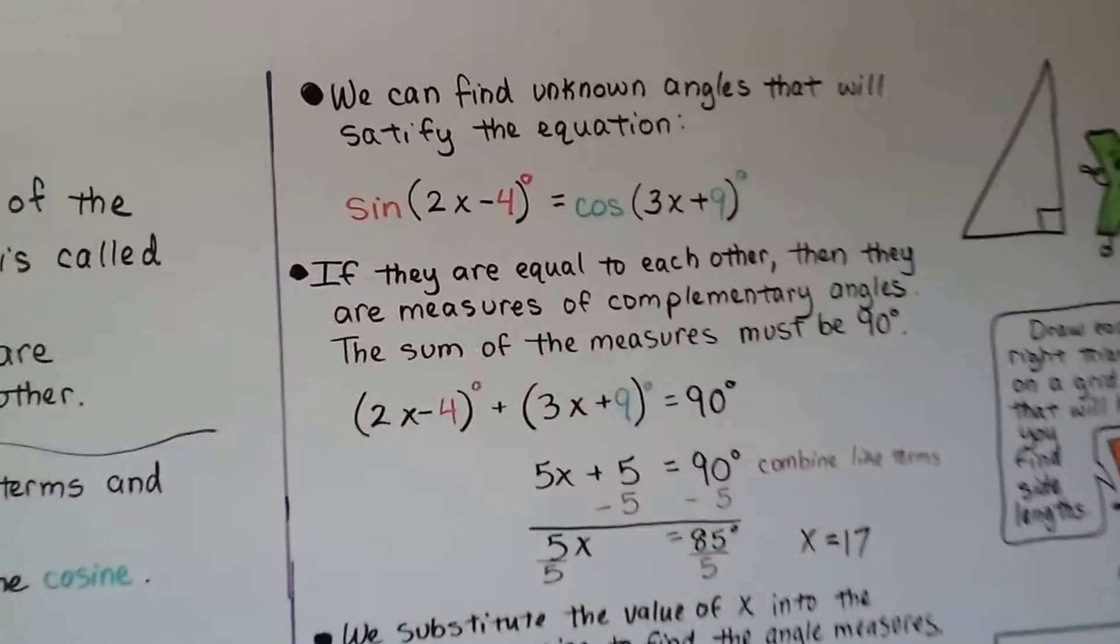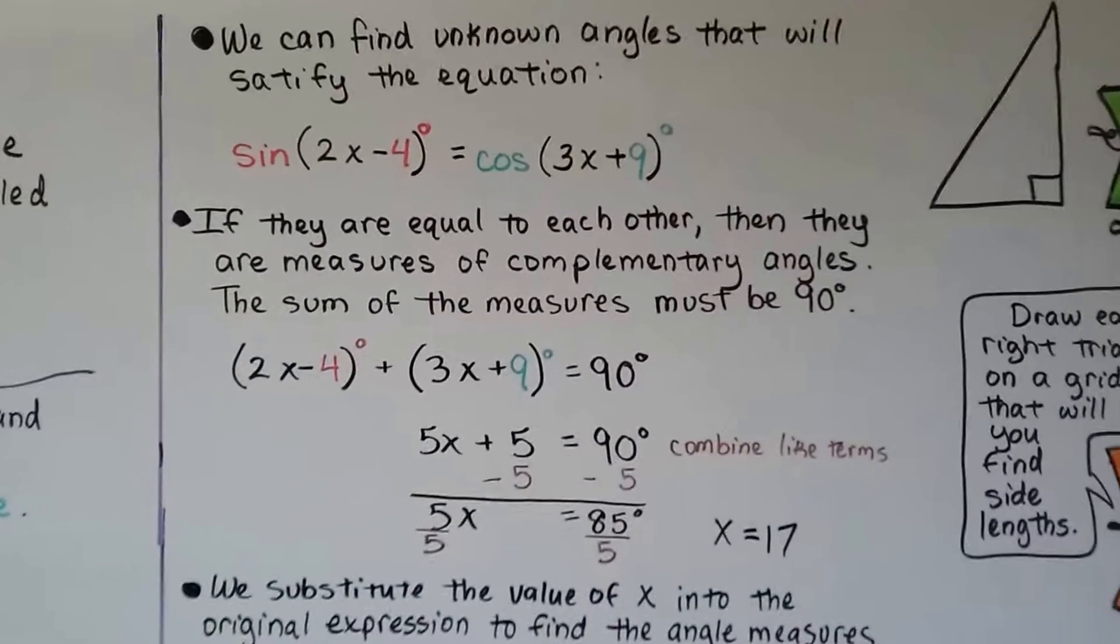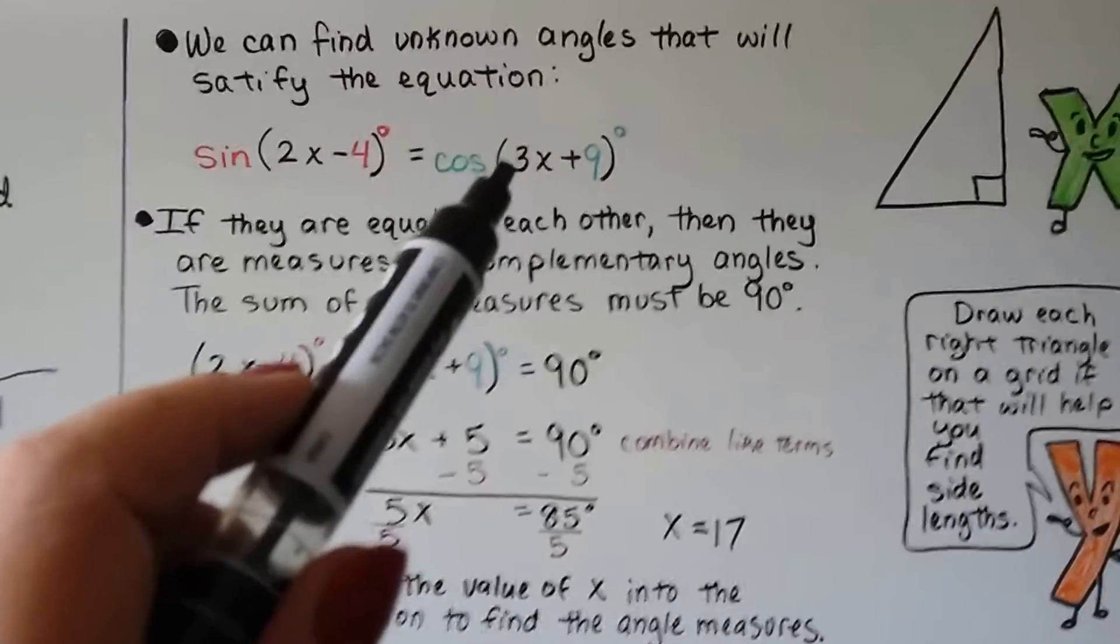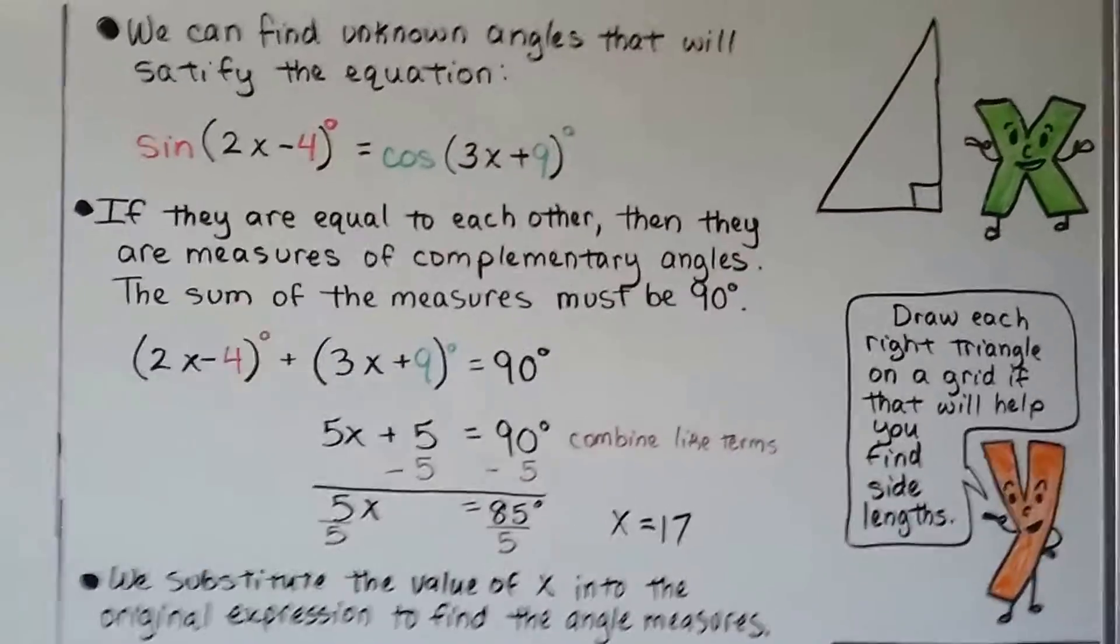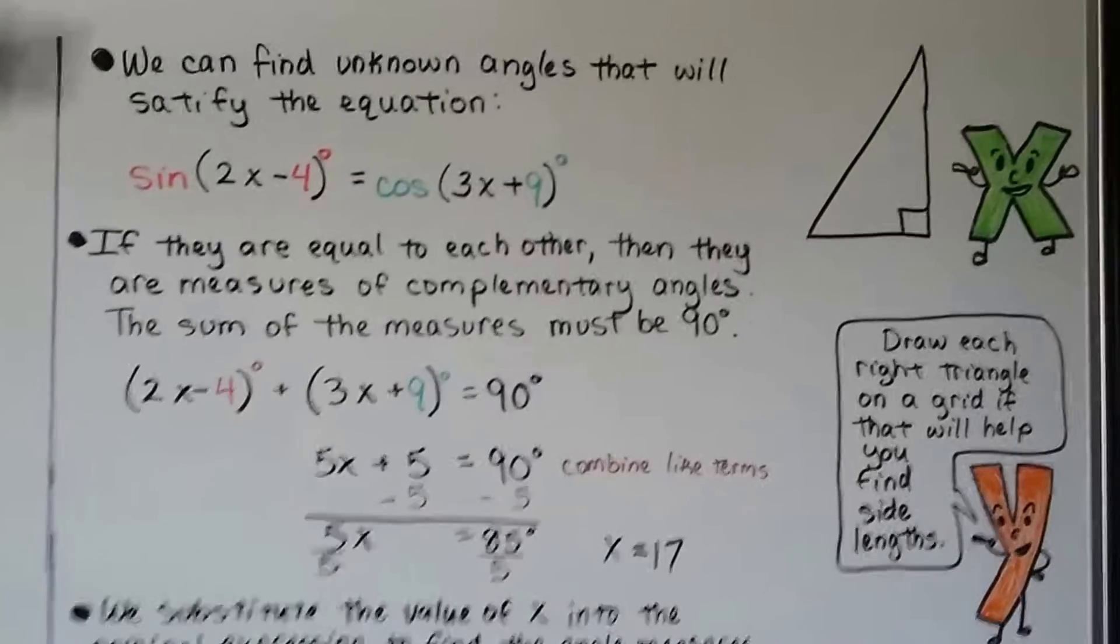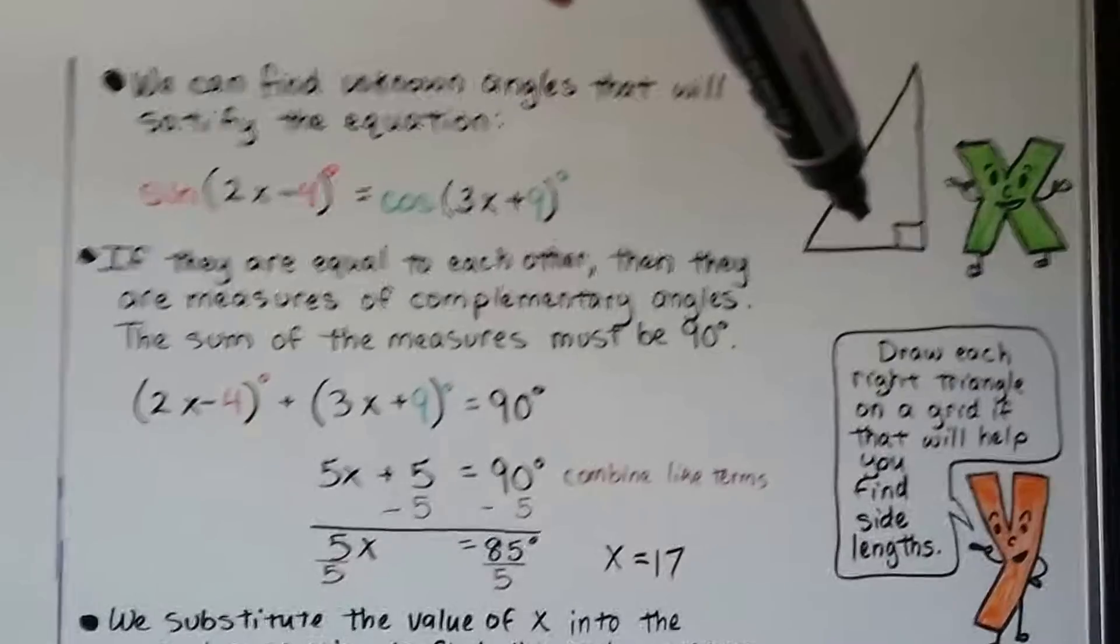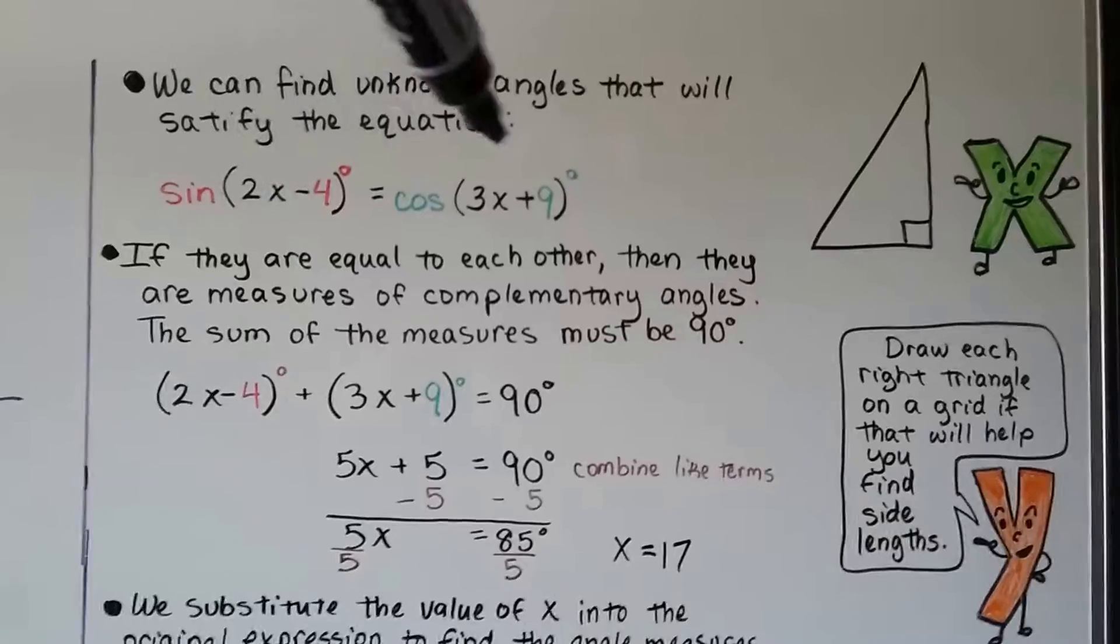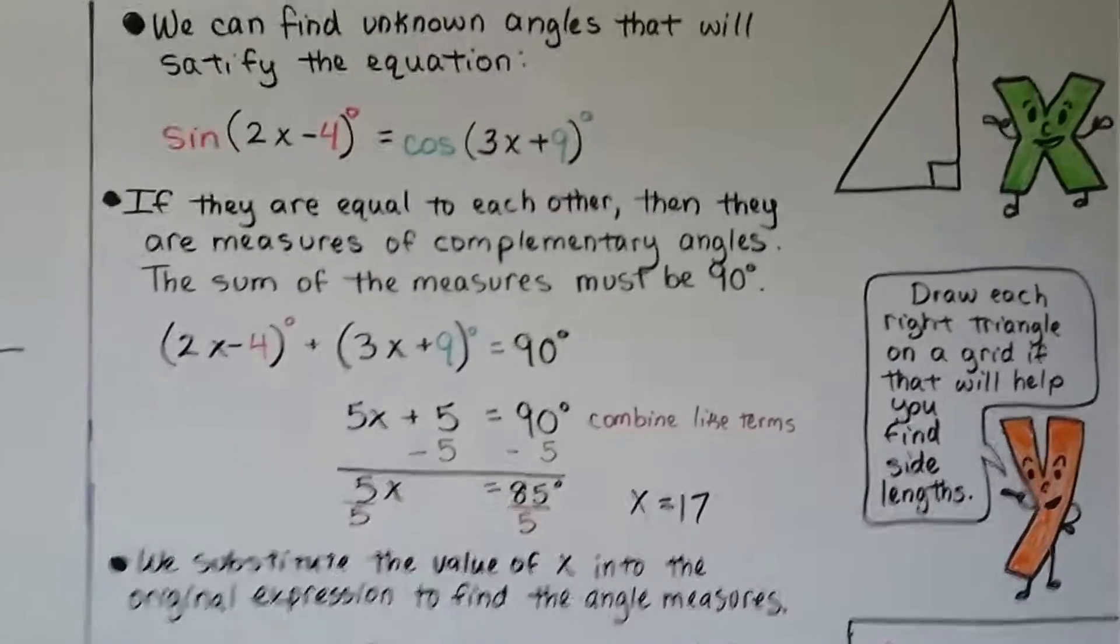And we can find unknown angles that will satisfy the equation sine times 2x minus 4 degrees is equal to cosine times 3x plus 9 degrees. Now, they're equal to each other. Well, then their measures of complementary angles must be 90 degrees. We know that's 90 degrees. And the triangle sum theorem says it's all 180 degrees inside, so the only thing that's left is 90. And if they're set equal to each other, we know that if we add 2x minus 4 degrees plus 3x plus 9 degrees, they'll equal 90.